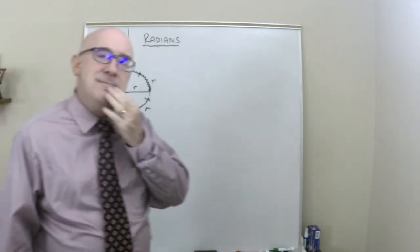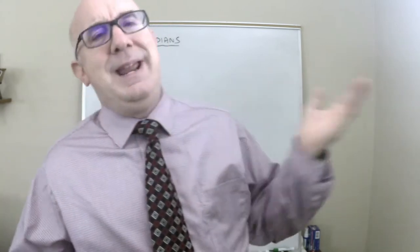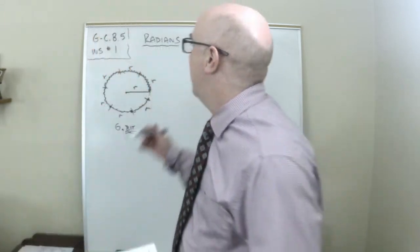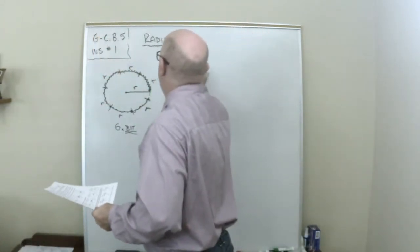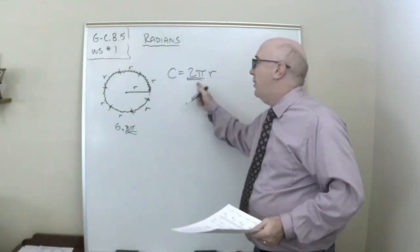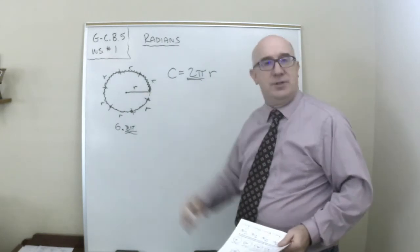Now somebody might say, like me, why do we get six in a bit? Why is it? And a good student might say, wait a minute. Circumference equals two pi r. Guess what? That's how many radii fit around a circle.